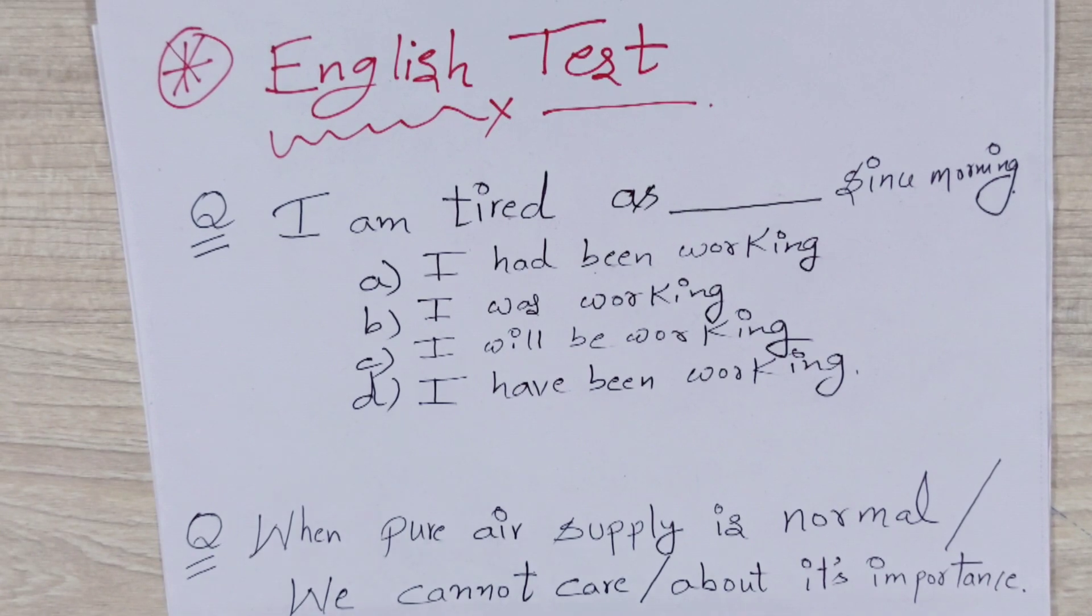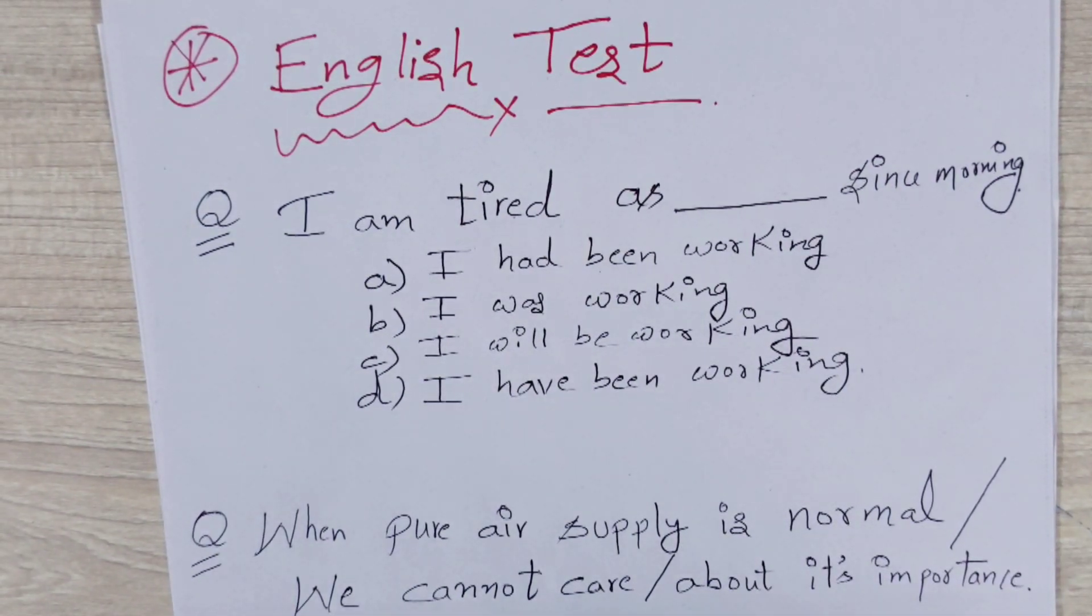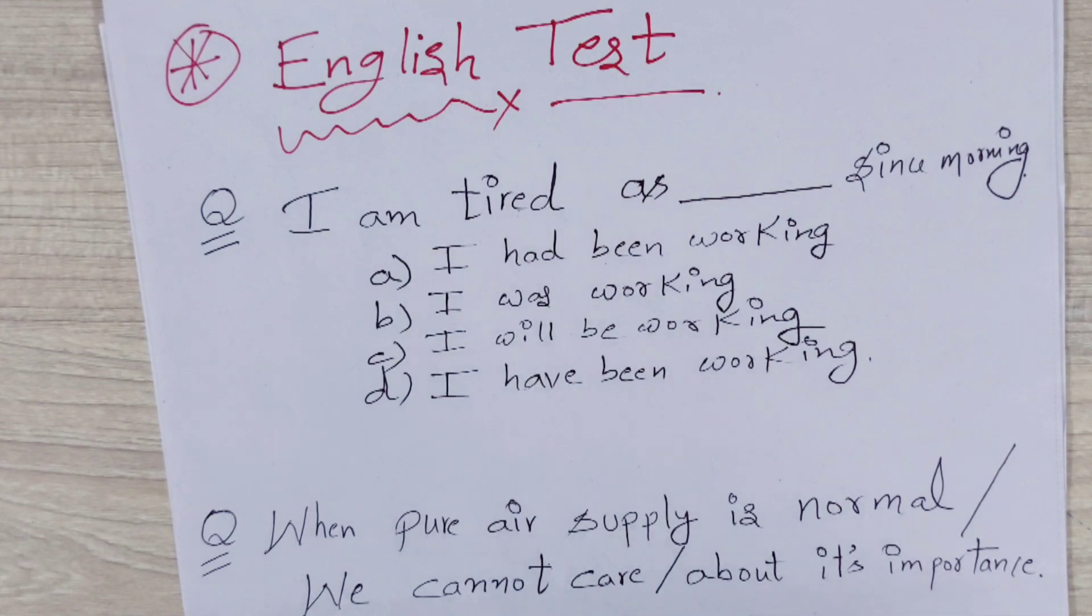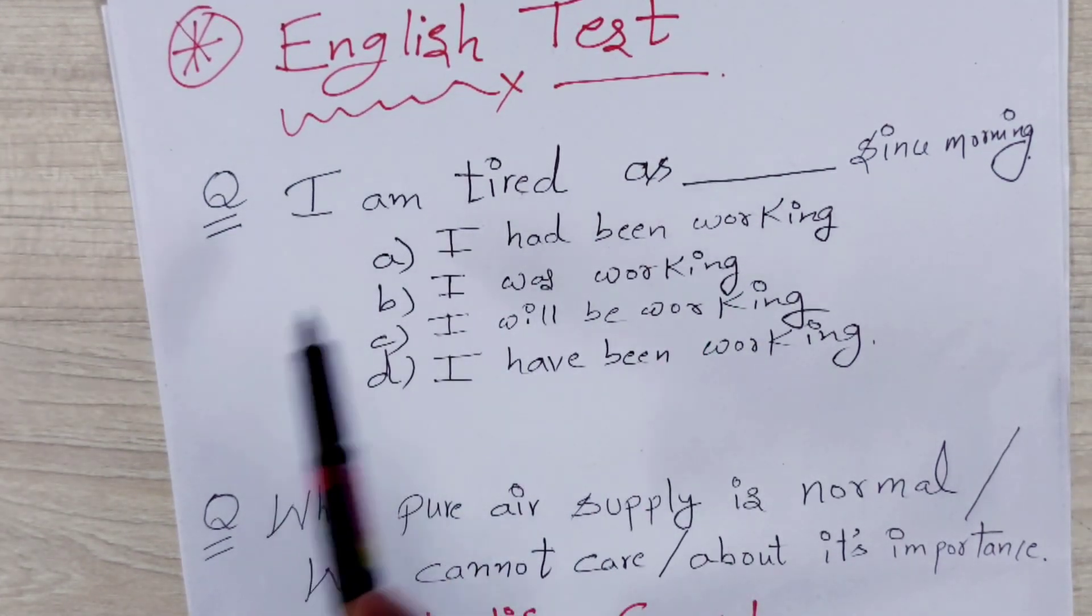So guys, after those 5 cognitive games, now English portion will come in the IBM test, which is quite simple. For example, I am tired. This is the grammatical portion.